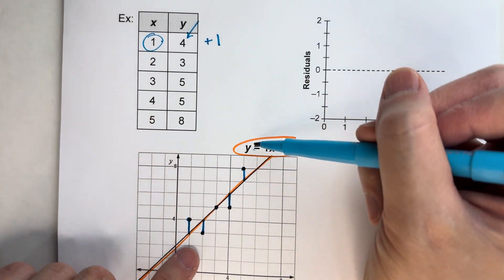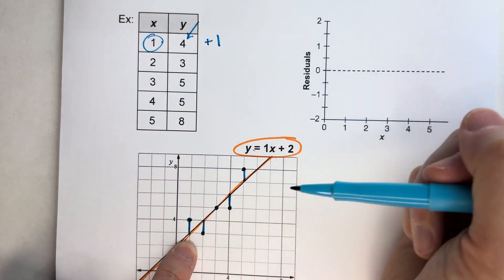And if you remember from our graph, remember that first dot? It was 1 above the line.